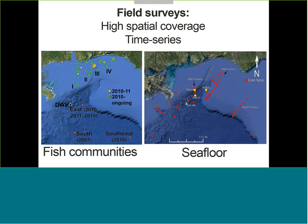Our field survey was focused on sampling as much as possible, with high spatial coverage and a time series of fish communities and sediments from the Gulf of Mexico. The left side map shows sites on the continental shelf looking at fish communities, and the southern red side shows our collection of deep mesopelagic fish communities. On the right side is our core sites in the Gulf of Mexico since 2010.